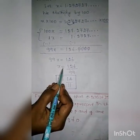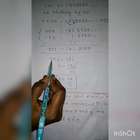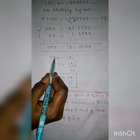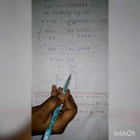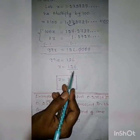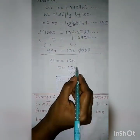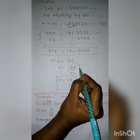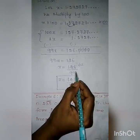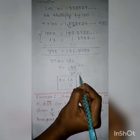So X equal to 126 divided by 99. Because 99 into X means multiply; transposing to the RHS it becomes divide. Here, 126 divided by 99 is divisible by 3. 4 threes are 12; 2 threes are 6. Cut by 3: 3 threes are 9; 3 threes are 9 again.